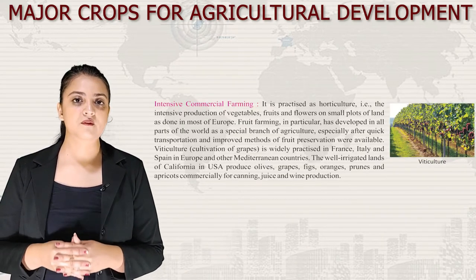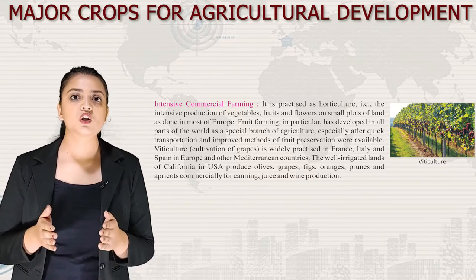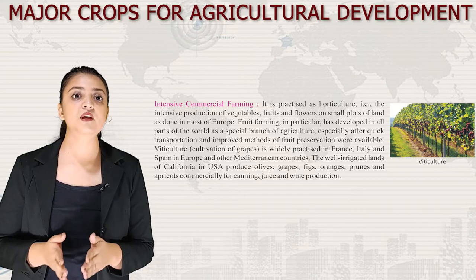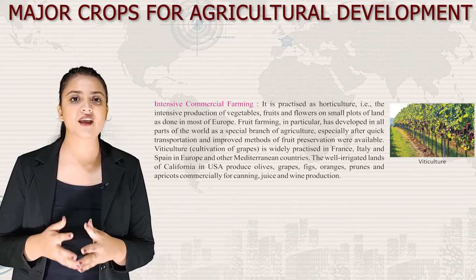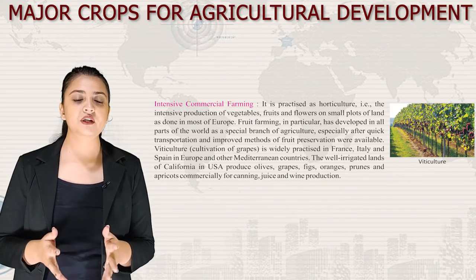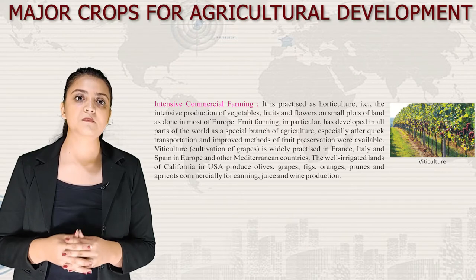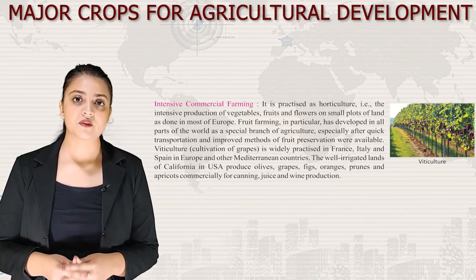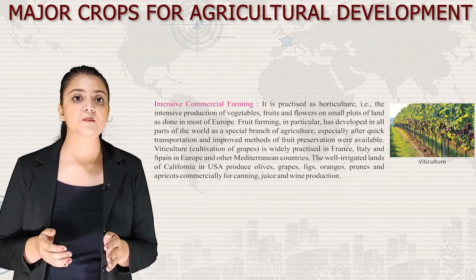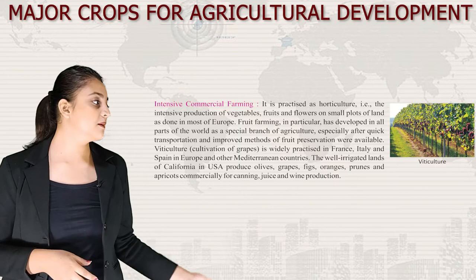Next we have intensive commercial farming, practiced as horticulture — the intensive production of vegetables, fruits and flowers on small plots of land, as done in most of Europe. Fruit farming has developed in all parts of the world, especially after quick transportation and improved preservation methods became available. Viticulture, i.e., cultivation of grapes, is widely practiced in France, Italy, Spain and other Mediterranean countries. The well-irrigated lands of California, USA produce olives, grapes, figs, oranges, prunes and apricots commercially for canning, juice and wine production.